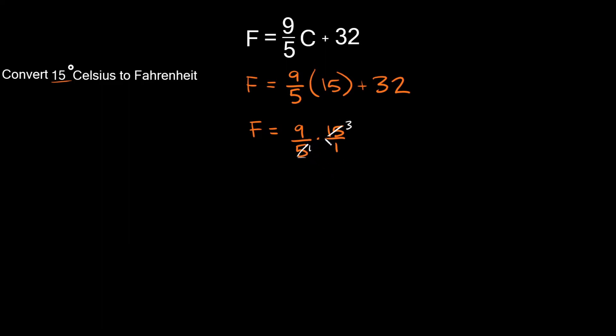Simplifying this, 9 times 3 equals 27, and that's going to go over 1 times 1, which equals 1. Remember we're adding 32, plus 32.